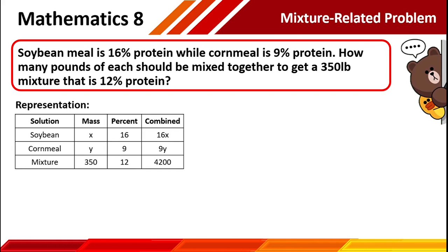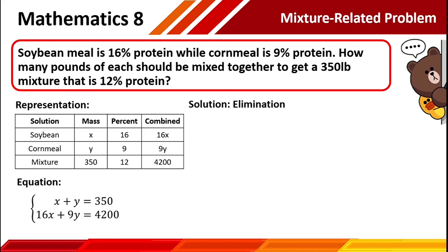As you can see, this is just the same as problem number 1. Our equations are: for equation number 1 about the mass, x plus y is equal to 350. And for the combined mixture, we have 16x plus 9y is equal to 4,200. The best solution here is the elimination method. We have x plus y equals 350, and 16x plus 9y equals 4,200.